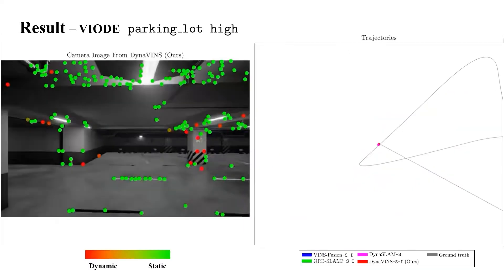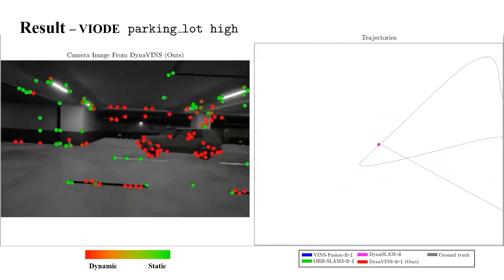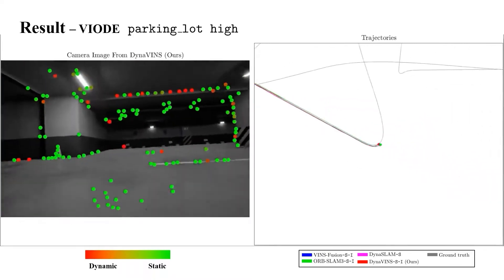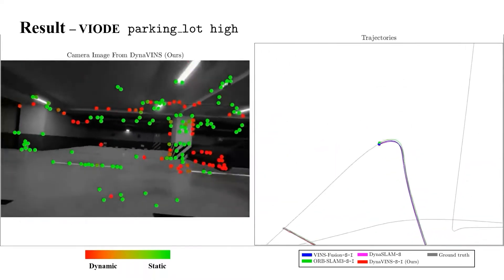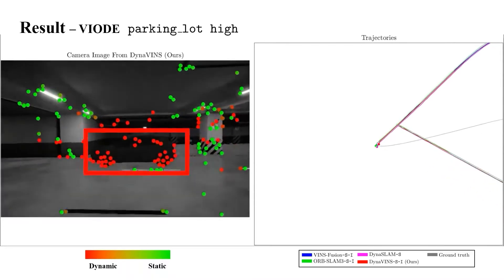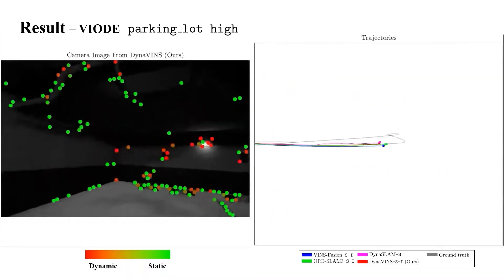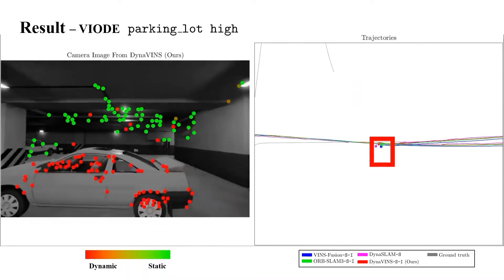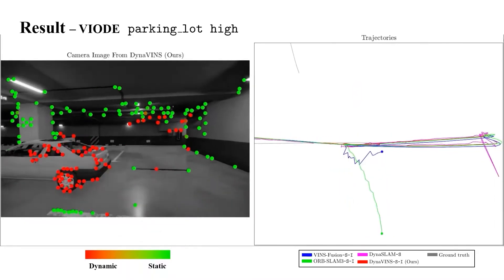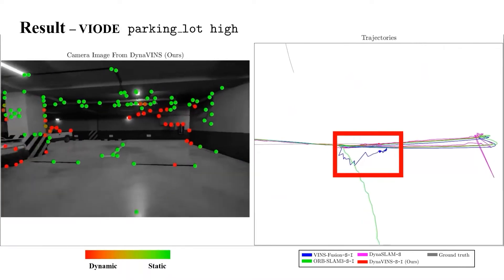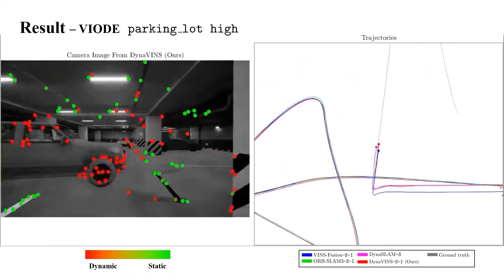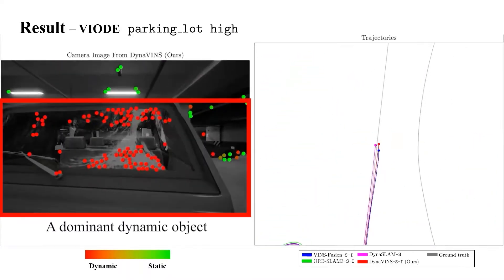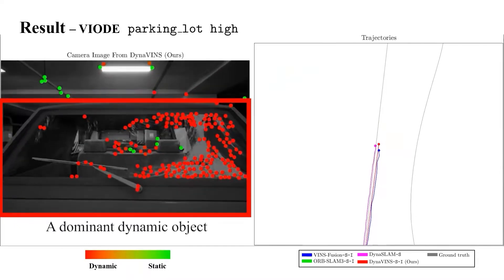We will show the results of algorithms on parking lot high sequence on VioD dataset. As in the left image, our algorithm rejects the features from dynamic objects well. While observing a car, trajectory from ORB-Slam is diverged and from VIN's fusion is being unstable. And if dominant dynamic objects exist, Dynaslam cannot reject it and diverged.